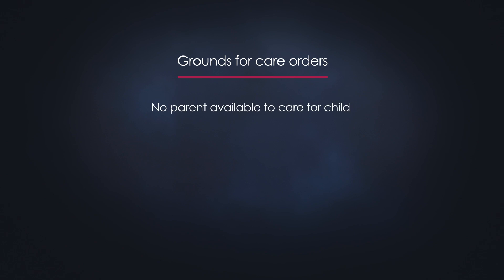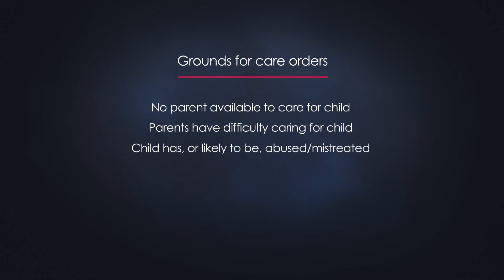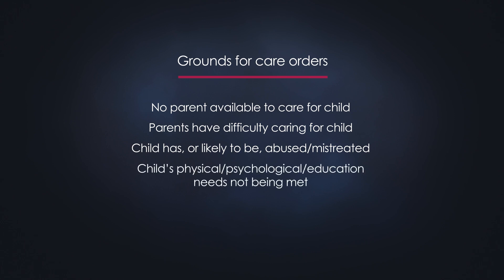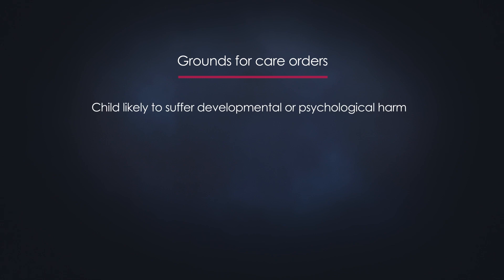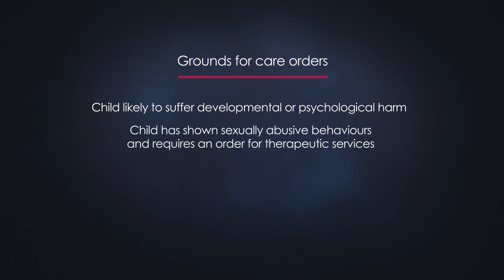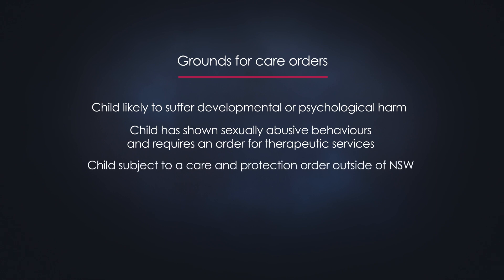Section 71 sets out the grounds on which the court can make a finding that a child is in need of care and protection. These grounds include: there is no parent available to care for the child because of death, incapacity or any other reason; the parents acknowledge they have serious difficulties in caring for the child; the child has been or is likely to be physically or sexually abused or ill-treated; the child's basic physical, psychological or educational needs are not being met; the child is suffering serious developmental impairment or psychological harm because of their domestic environment, which usually relates to family violence; for a child under 14, the child has exhibited sexually abusive behaviours requiring therapeutic services; the child is subject to a care and protection order of another state or territory not being complied with; or the child is in unauthorised out-of-home care and has been unable to be removed.